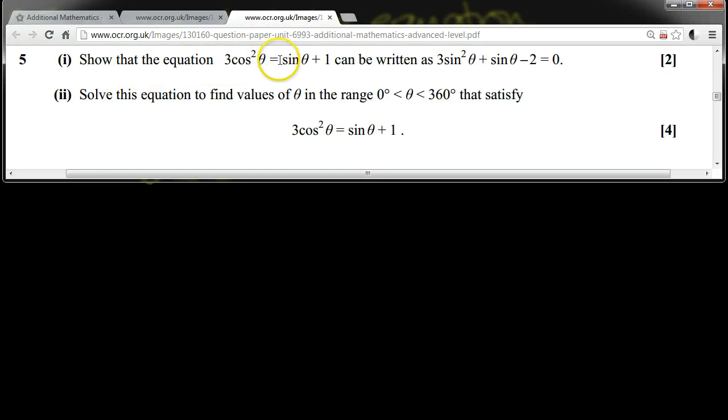Show that the equation 3cos²θ = sinθ + 1 can be written as 3sin²θ + sinθ - 2 = 0. Solve this equation to find values of θ in the range 0° < θ < 360° that satisfy 3cos²θ = sinθ + 1.